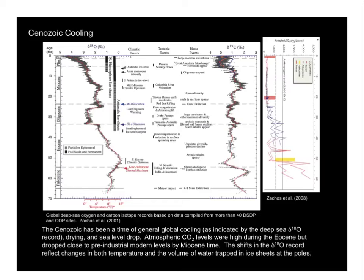Let's start with the carbon isotope curve. Remember that the ratio of carbon-13 to carbon-12 is a proxy for changes in Earth's carbon cycle. Overall, the Cenozoic has been largely stable. Even the few excursions that are present are of much smaller magnitude than, say, the end-Permian. So for the most part, you can see it's pretty stable all the way through, with a little waviness and a drop towards the present day.